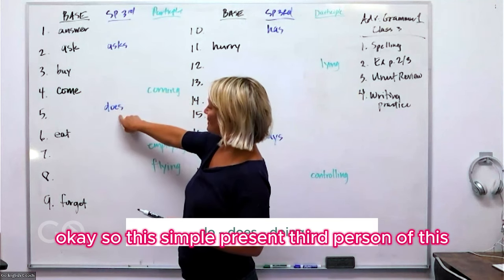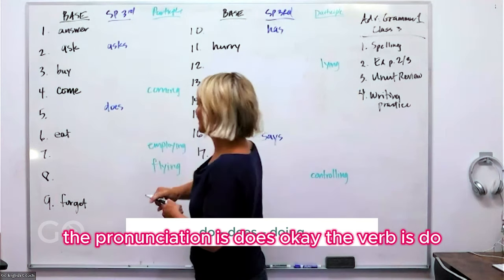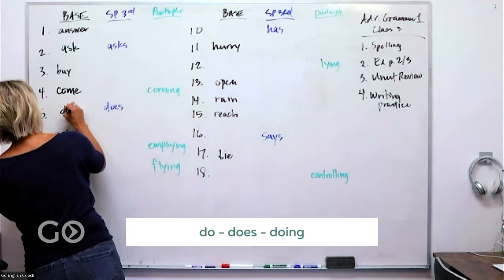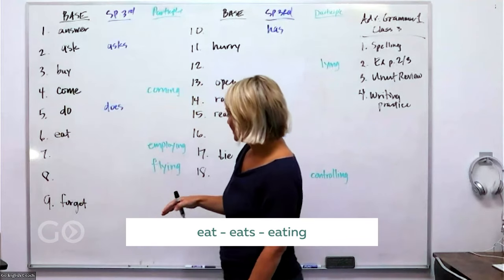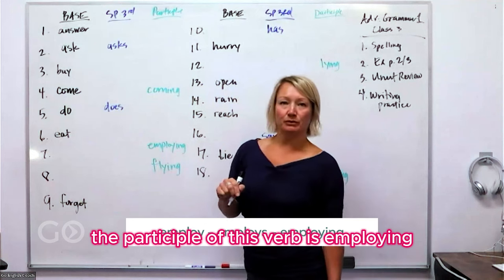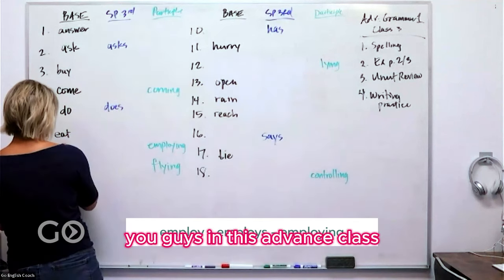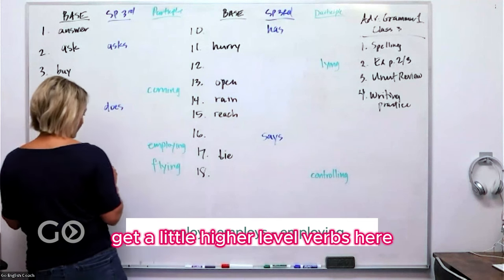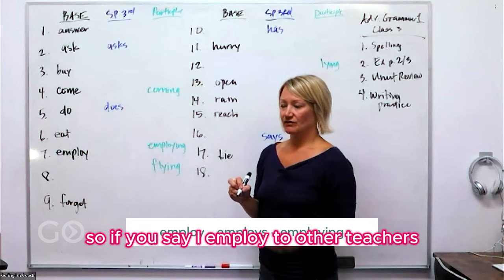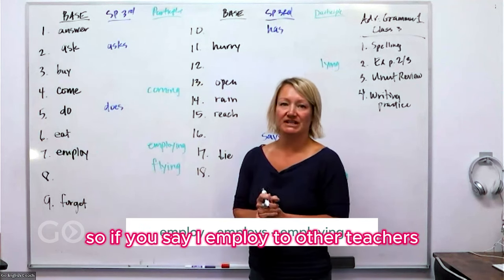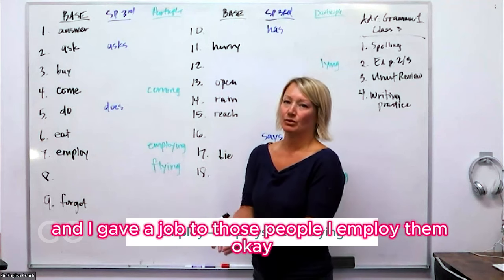The simple present third person pronunciation is 'does' — the verb is 'do.' Then we've got 'eat,' which is already done for us. The participle of this next verb is 'employing.' In this advanced class you get higher-level verbs. To employ means to hire somebody — so if you say 'I employ two other teachers,' that means you're the boss and gave those people a job.